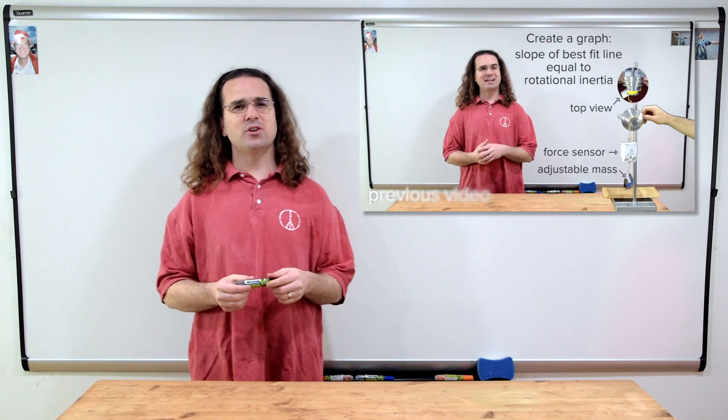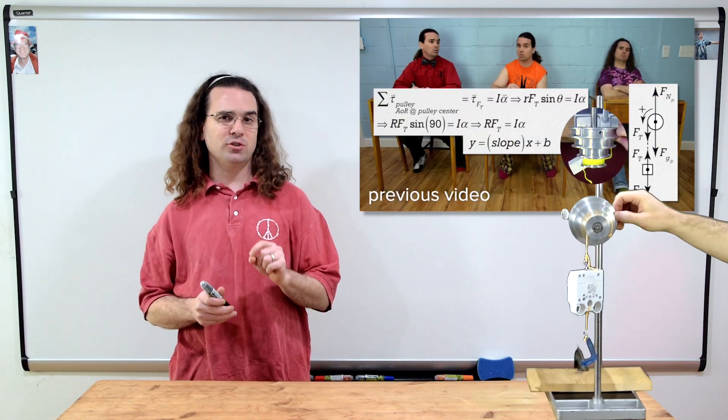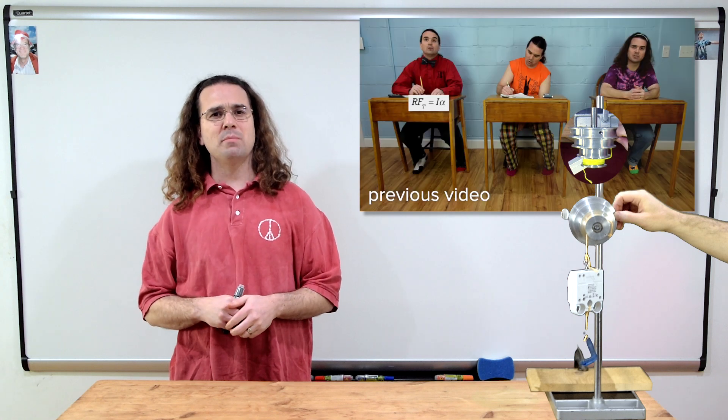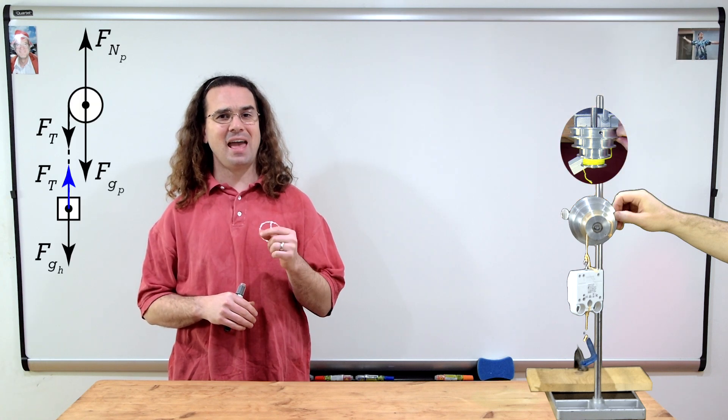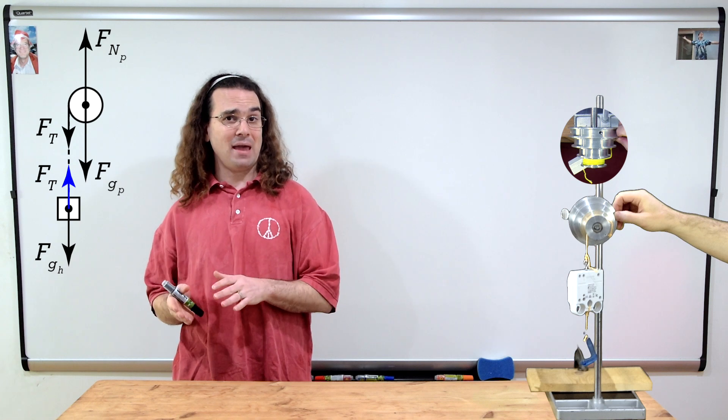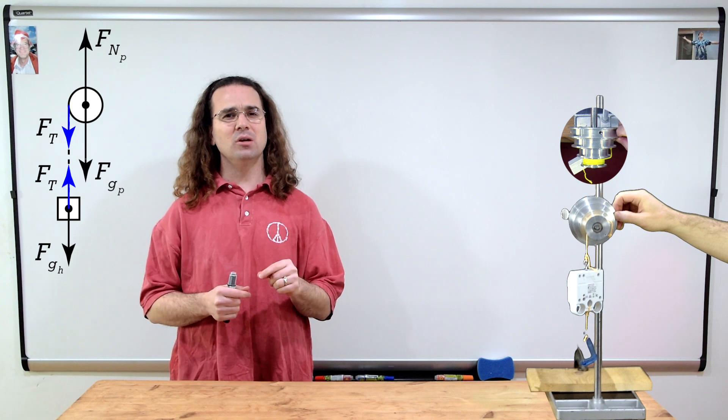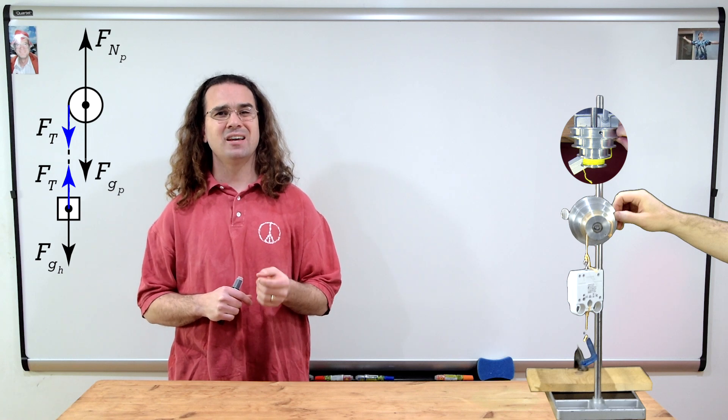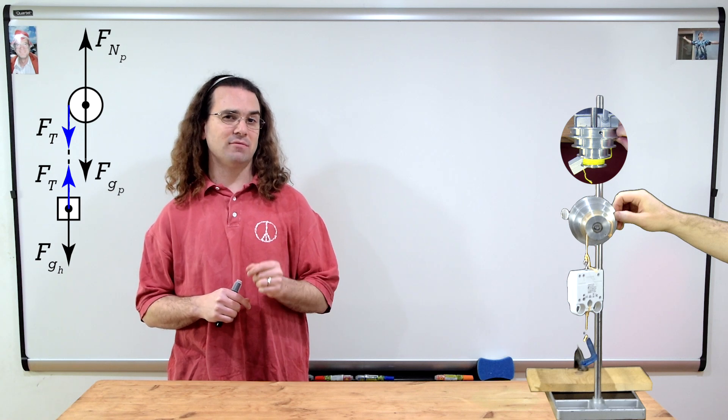Good morning. Previously, we determined the rotational inertia of the rotational inertia demonstrator from Arbor Scientific. In order to do so, we measured the force of tension acting on the hanging mass, which has the same magnitude as the force of tension acting on the pulley. Let's take a look at how the measured force of tension changes depending on the acceleration of the pulley.